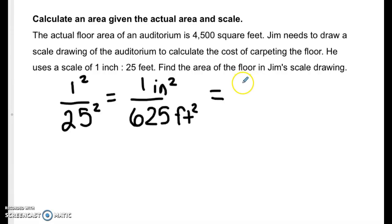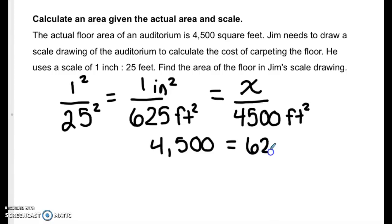I don't know the area of the floor in the scale drawing but I do know that the actual square footage is 4,500 feet. Now I can cross multiply: 1 times 4,500 is 4,500 and 625 times x is 625x. Now I can divide 625 on both sides. So 4,500 divided by 625 is 7.2. So the floor area in the scale drawing is 7.2 square inches and that concludes our video for today.